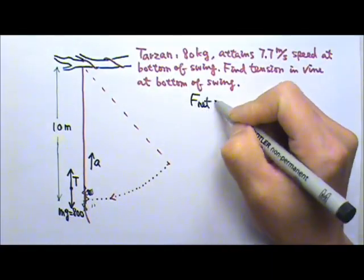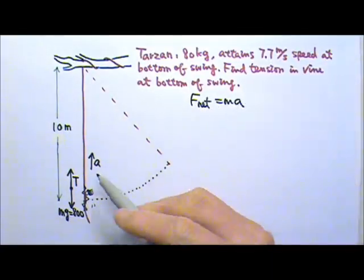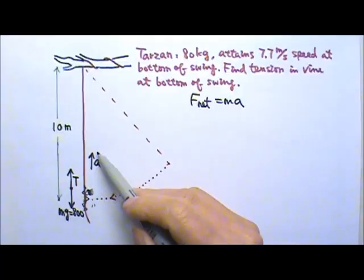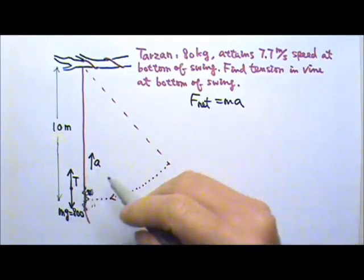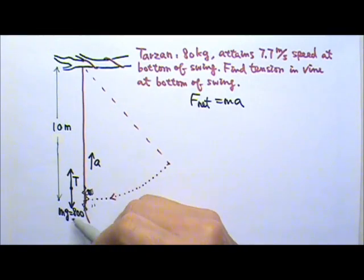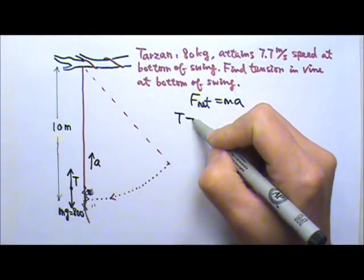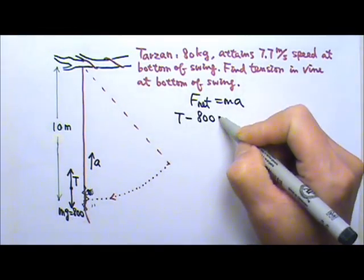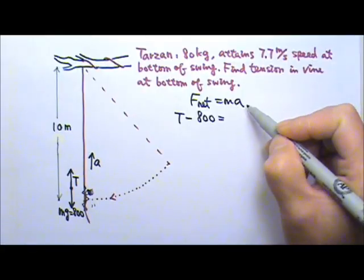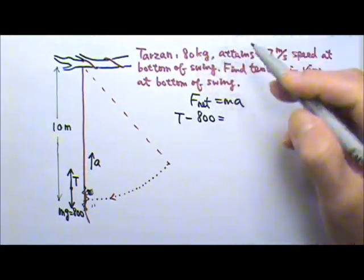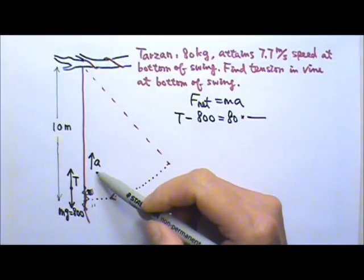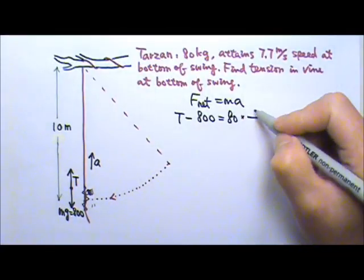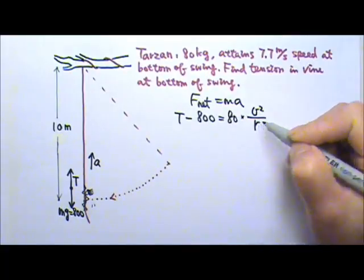For the net force equals Ma, since the acceleration is pointing upward that means the upward force must be bigger. So we go the bigger side minus the smaller side. Tension minus the downward 800 equals M times A. The mass is 80. The acceleration, that's the centripetal acceleration so we can use V squared over R.